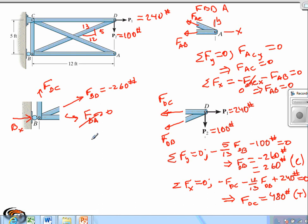So we apply equilibrium to get force BC. Sum of the forces along the Y equals zero. So we got FBC plus 5 over 13 FBD equals zero. Since we have FBD is negative 260 pounds.